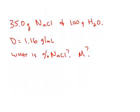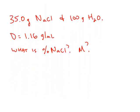So the first type of question we're going to deal with is a straightforward calculation of, in this case, the percent of sodium chloride. If you mix 35 grams of sodium chloride, 100 grams of water, you're told that the density of this solution is 1.16 grams per milliliter. And we want to know what is the mass percent, and secondly, what is the molarity of sodium chloride.